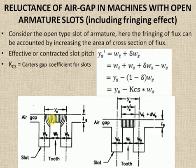In open slots, the flux won't be confined to the tooth portion alone. In addition, the flux would fringe around the tooth, as being shown here. Due to this fringing, the overall cross-sectional area of the flux path has been increased compared to the previous case.